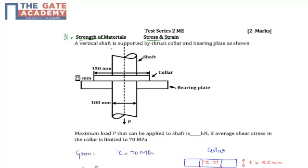The question says that a vertical shaft is supported by thrust collar and bearing plate as shown. So here is the arrangement of the shaft with the bearing plate and the collar. What is the maximum load that can be applied to the shaft if average shear stress in the collar is limited to 70 MPa?